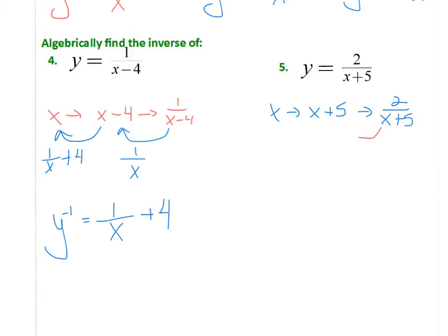To go backwards for the inverse, we're going to keep the numerator as 2, but that's over the denominator of the x. And then from there, we're going to subtract 5. So our inverse is 2 over x minus 5.